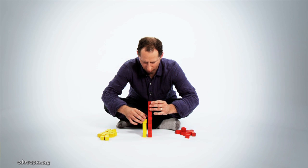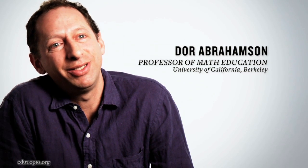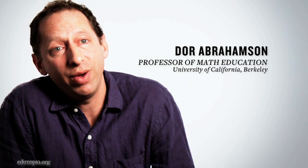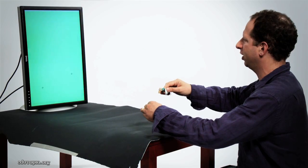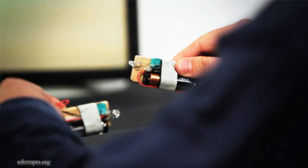What is mathematics if you think about it? Mathematics is a way of thinking. It's a way of solving problems. I'm Dor Abramson. I'm a professor of mathematics education over at UC Berkeley. I study the way that kids learn mathematics. I'm also an inventor. I build all kinds of gadgets, using both traditional and cutting-edge technology, to help kids learn and teachers teach.